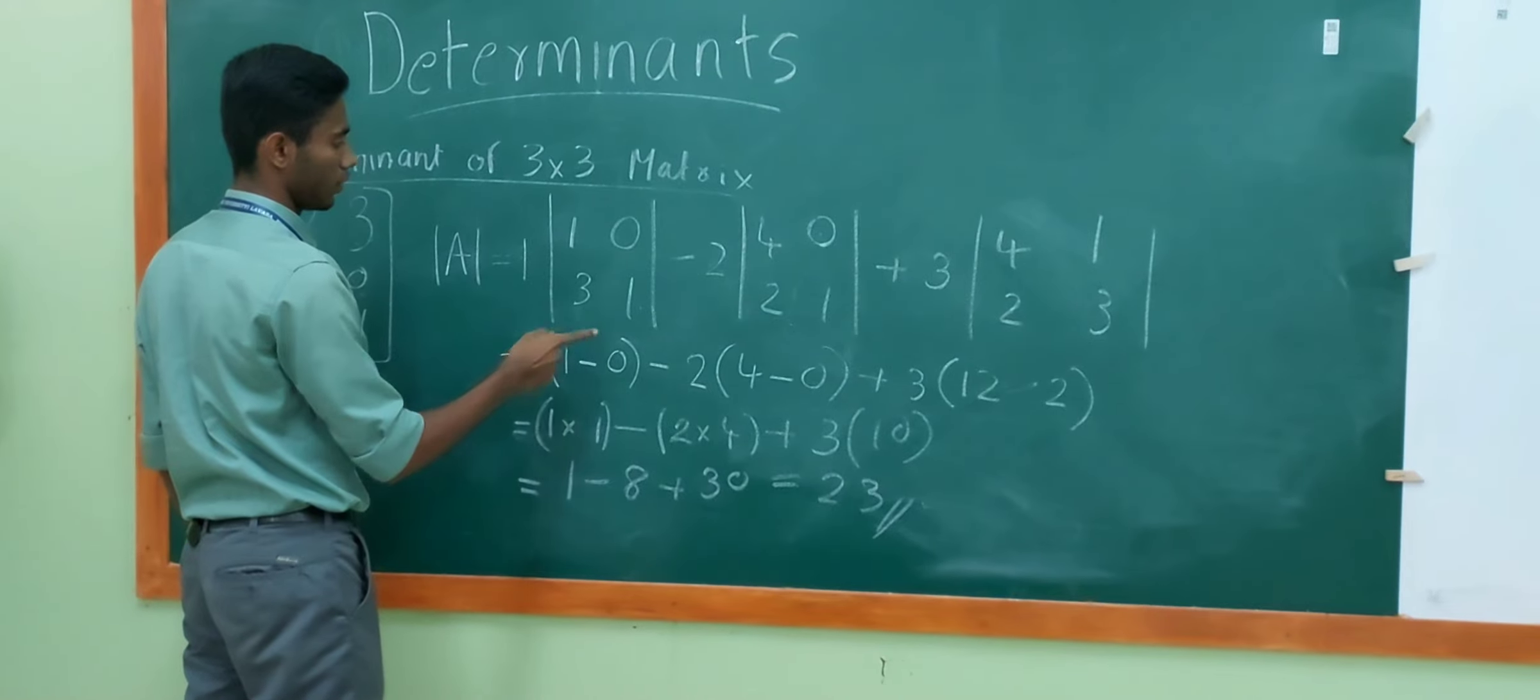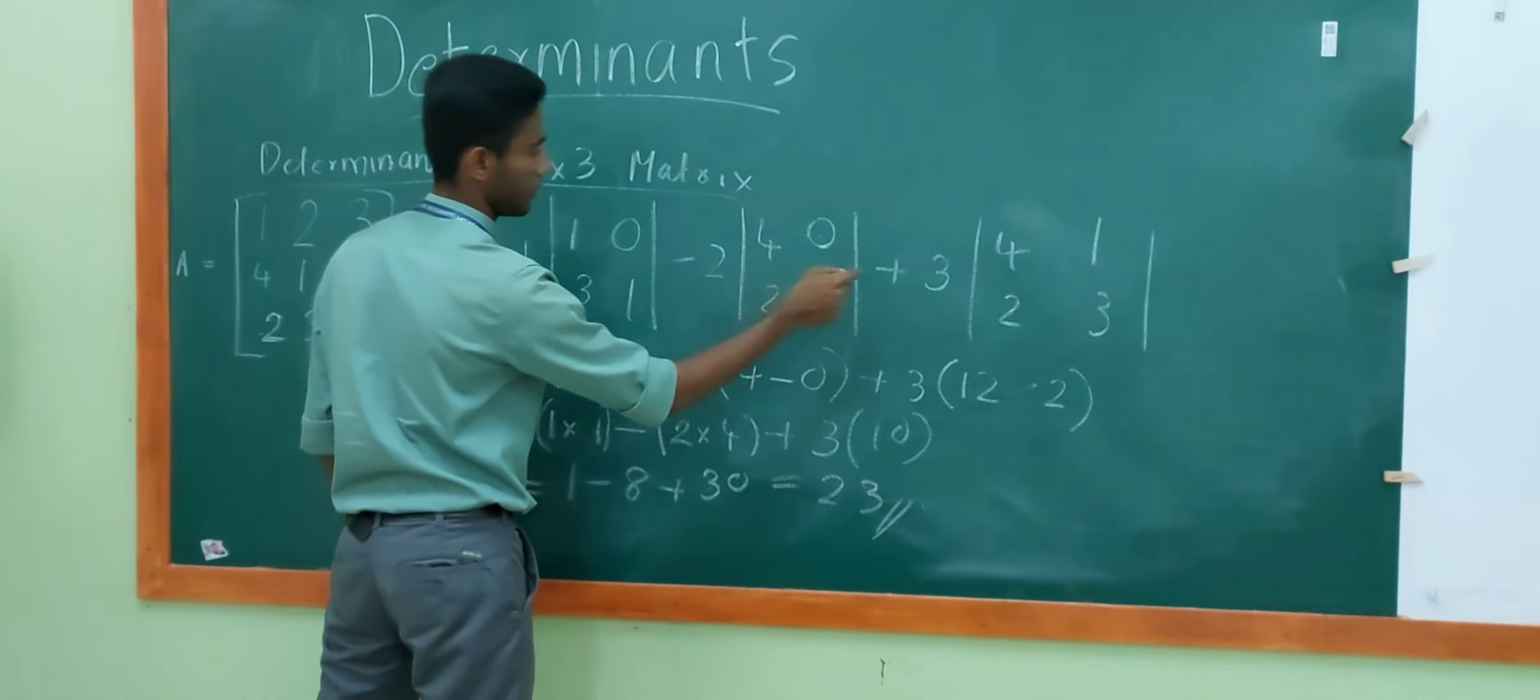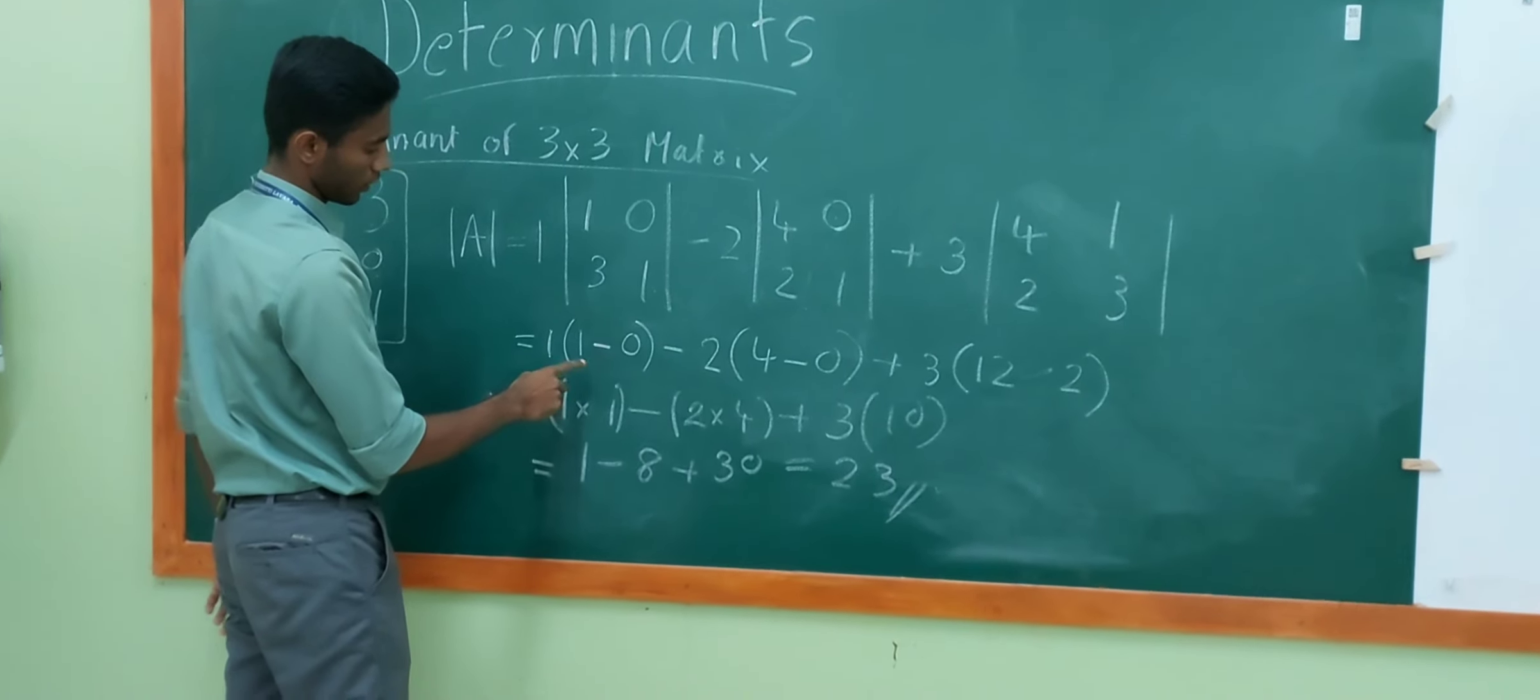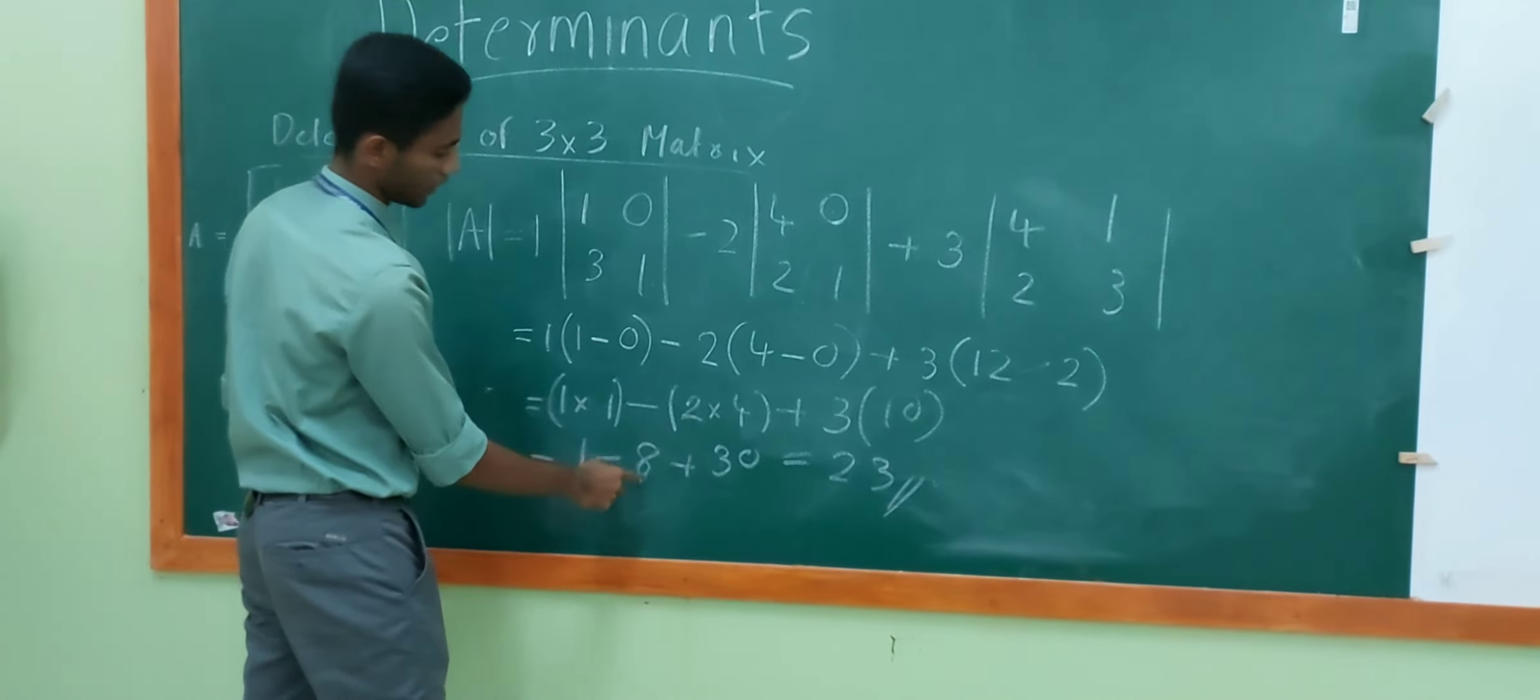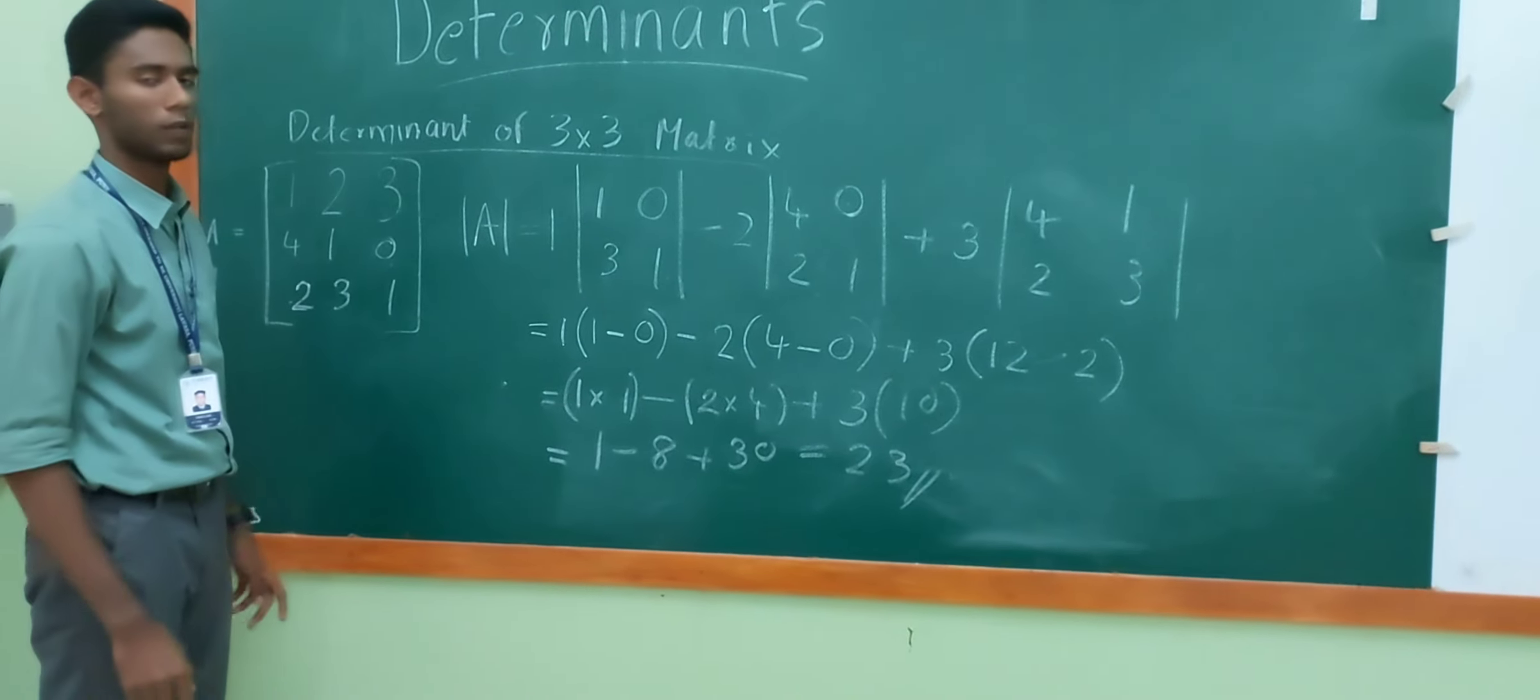Then, we should do the determinant for this one, this one, and this one. Then, multiply it with the respective numbers. After doing that, we will get 1 minus 8 plus 30, which is equal to 22. This is how we do the determinant for three variables.